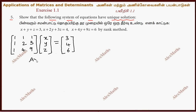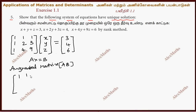If we write A times x equals b, this is the formula. This is the augmented matrix. So the augmented matrix [A|b] is: row 1 is 1, 1, 1 | 3; row 2 is 1, 2, 3 | 4; row 3 is 1, 4, 9 | 6.